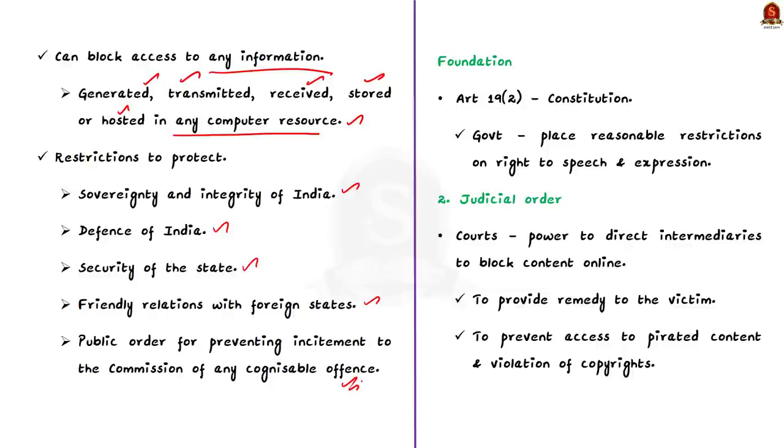What is the basis behind this? Section 69A draws its power from article 19 clause 2 of the constitution. Article 19 clause 2 allows the government to place reasonable restrictions on the fundamental right to freedom of speech and expression. Because of this provision only, government has this power to monitor and issue directions regarding the content that are available online.